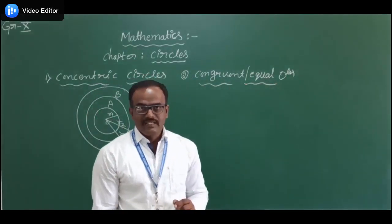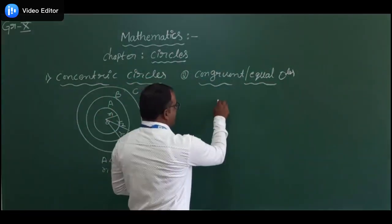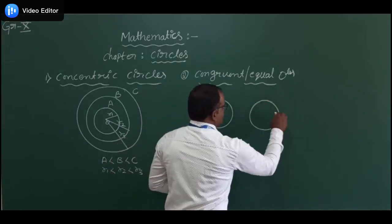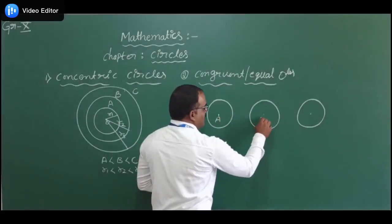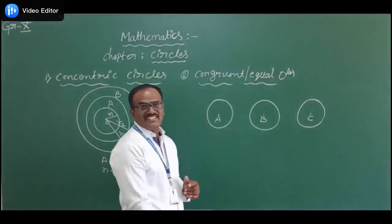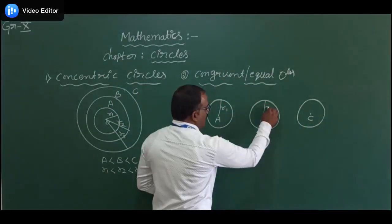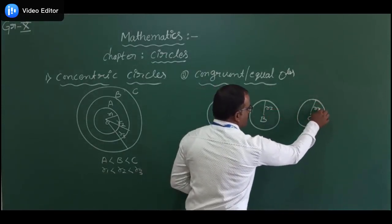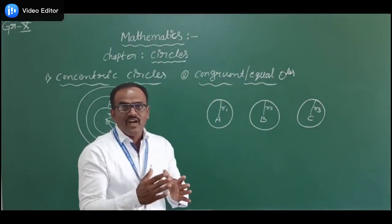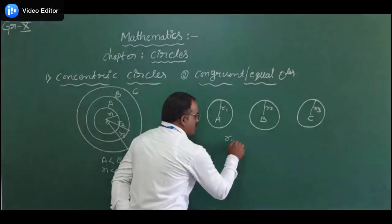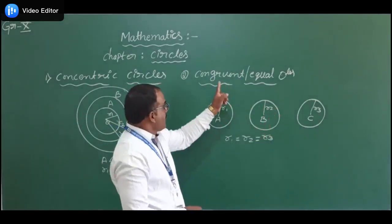What is the meaning of congruent circles or equal circles? Here are three circles: the first one with center A, the second with center B, and the third with center C. All three circles have the same radii — R1, R2, and R3 — all of equal length. That means R1 equals R2 equals R3.